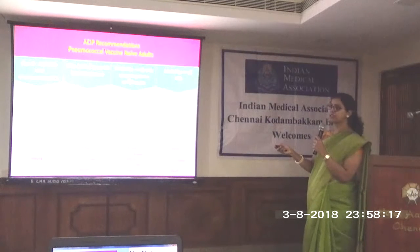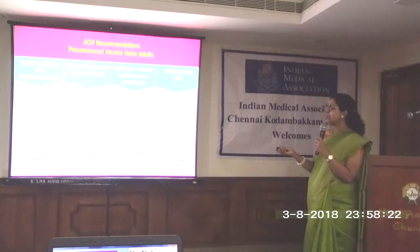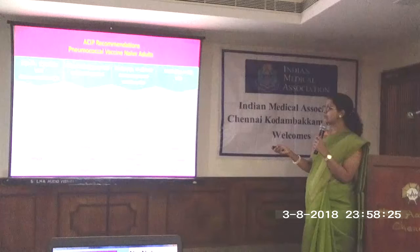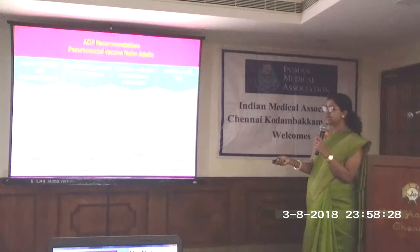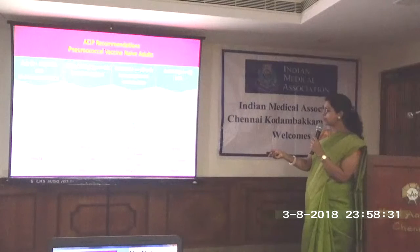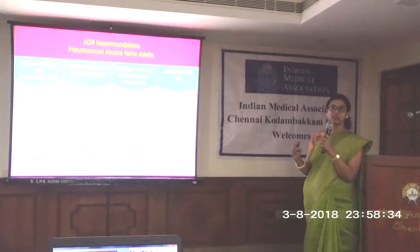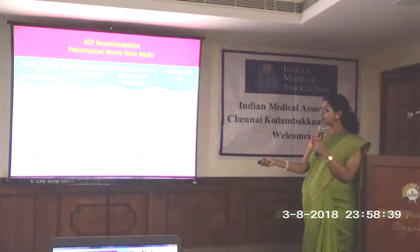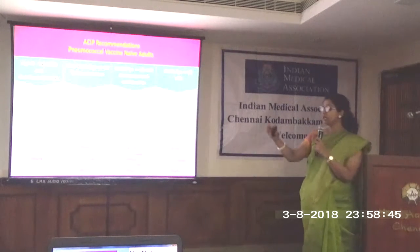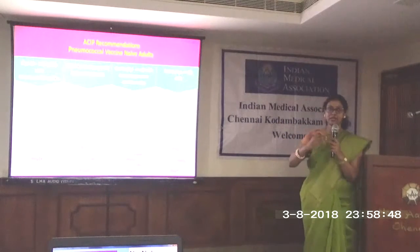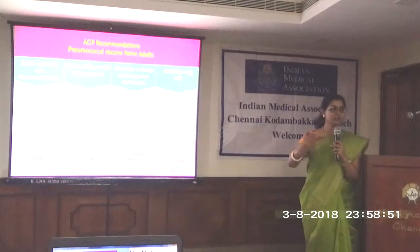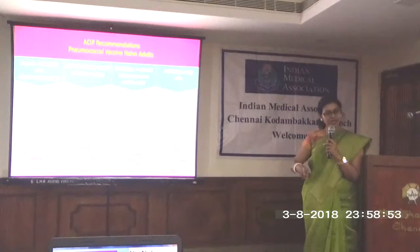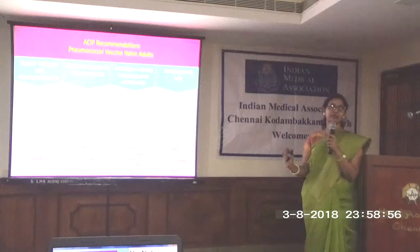For adults above 19 with immunosuppressed conditions — congenital immunodeficiency, HIV, or chronic renal failure — for most chronic conditions it is PPSV23. For renal failure or nephrotic syndrome patients, give PCV13 first, then after 8 weeks or more, PPSV23, and repeat one more dose of PPSV23 after 5 years. This should be completed between 19 and 64 years. Once the patient crosses 64 years, you can administer one more dose of PPSV23 after 5 years.